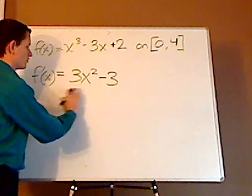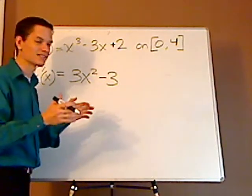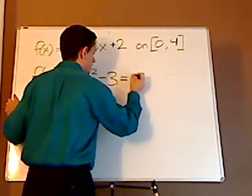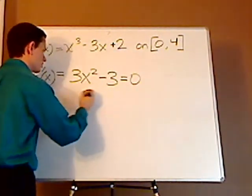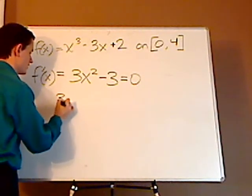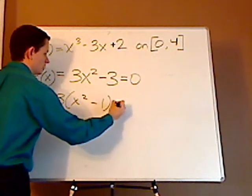There's nothing in the denominator, so you don't have to worry about where it doesn't exist. You just have to worry about where it's equal to 0. So you factor this - I'll factor out a 3. I get x squared minus 1 equals 0.